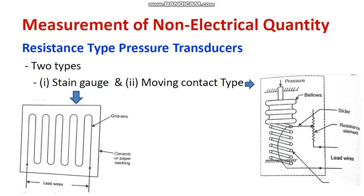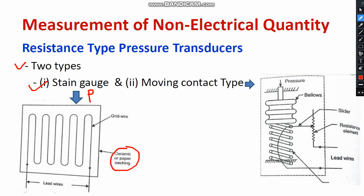First, I would like to discuss the resistance type pressure transducer. There are two types. The first one is called the strain gauge type. I have already discussed strain gauge in detail — the link is available in the description box. We apply pressure externally. You can see a ceramic or paper backing with a cover, and inside there is a grid wire made up of a conductive material — preferably lead wire. With respect to the application of pressure, the length of the lead wire changes.